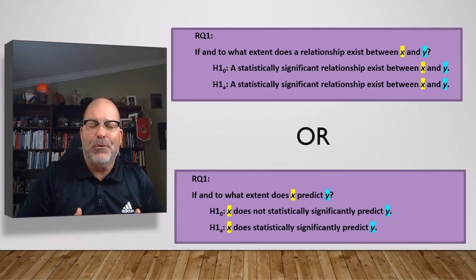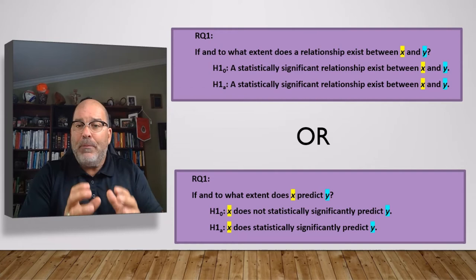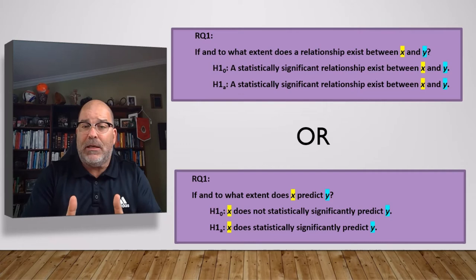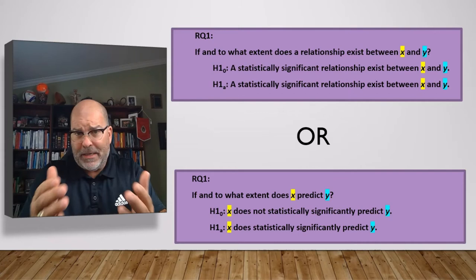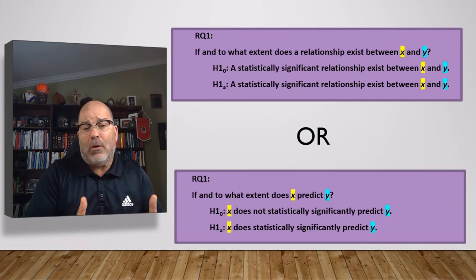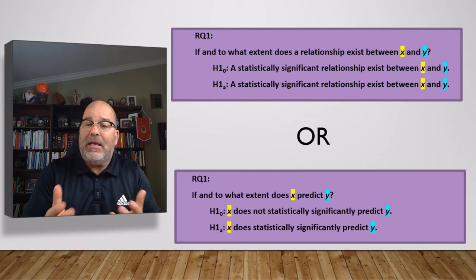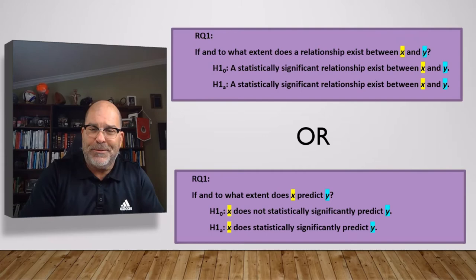As we move to the research question, I want to have a quick discussion, because as I mentioned in my disclaimer, I'm applying a formula and the formula doesn't always fit. You may see correlational research questions framed as: if and to what extent does a relationship exist between X and Y. Our real-world example uses prediction, so we follow: if and to what extent does X predict Y. Be aware that just because I'm giving you one example doesn't mean it's universal. I simplify this to make it easy to follow as you build your study in its early stages.